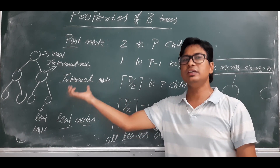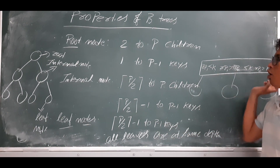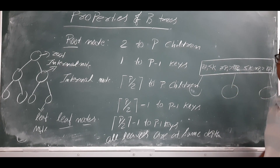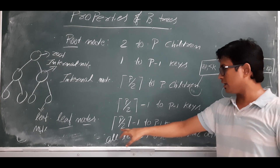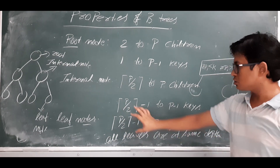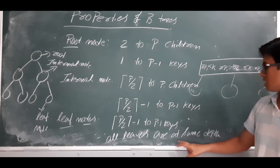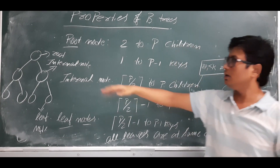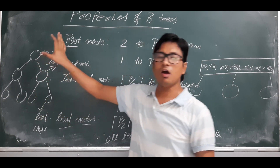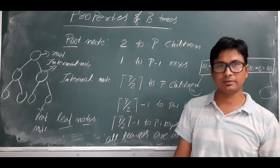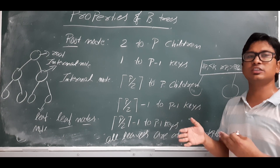Leaf nodes do not have any children — that is the definition of a leaf node. But they do have key-record pointer pairs. The block pointers in leaf nodes will have null values when implemented as a data structure. Leaf nodes have between ceil(p/2) minus one and p minus one keys, so the number of keys in leaf nodes and internal nodes is the same. One more important point: all leaf nodes are at the same depth, meaning the height from the root node to any leaf node must be the same. In the next video we will discuss the insertion of a B-tree.